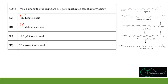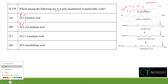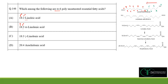For omega nomenclature, we number carbons from the end opposite to the functional group. Counting from that end: the first double bond occurs at position 6. Therefore, linoleic acid (18:2) is an omega-6 fatty acid, and option A is correct.